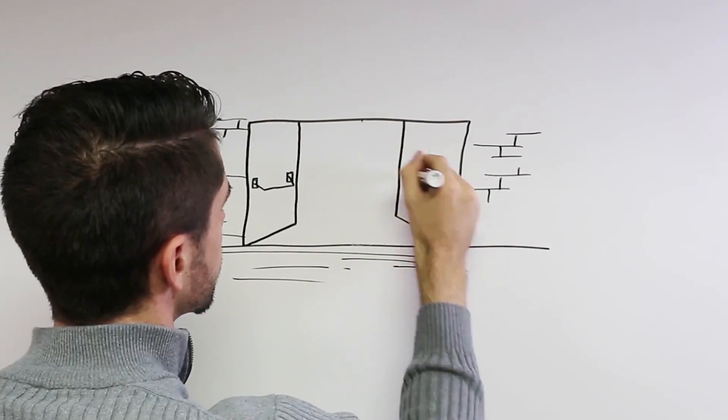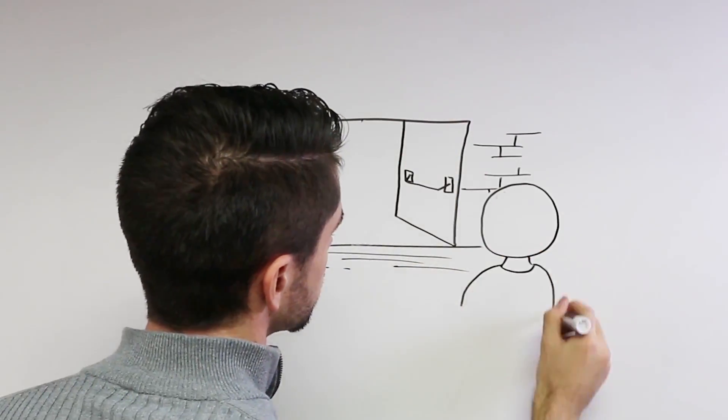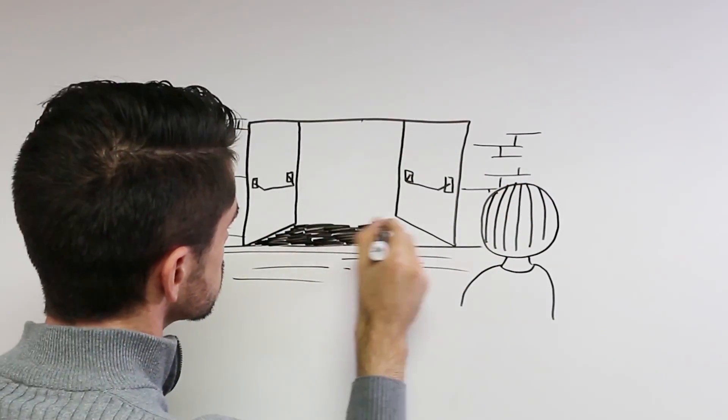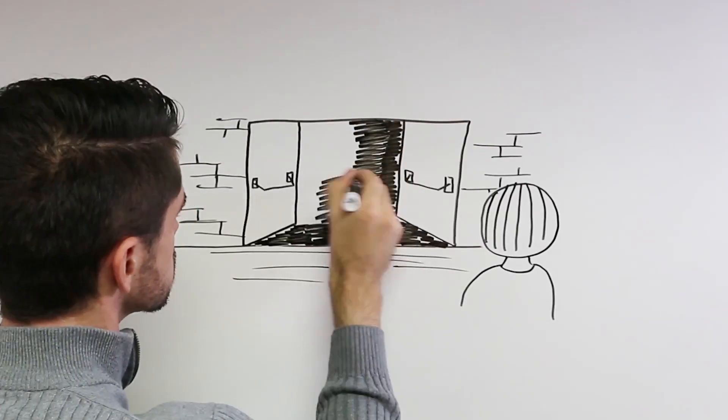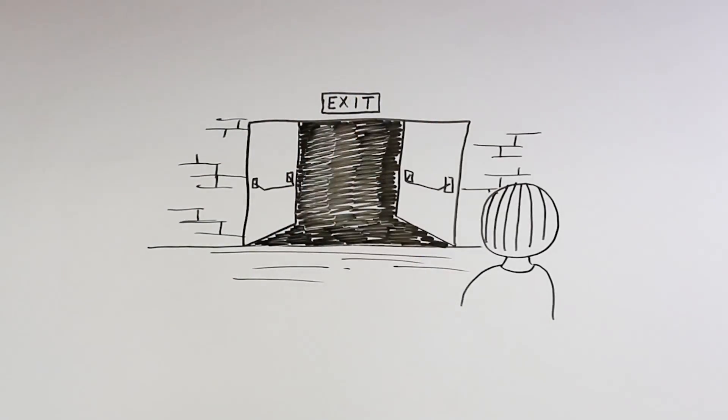Fortunately, since Von Dupren made its first exit device, building codes have been put in place to make sure public buildings have sufficient exits so that everyone should be able to get out of a building in case of a fire or other emergency.